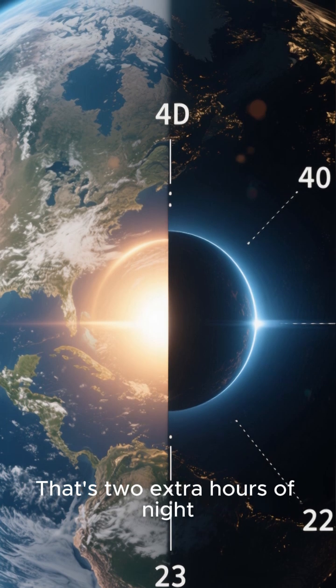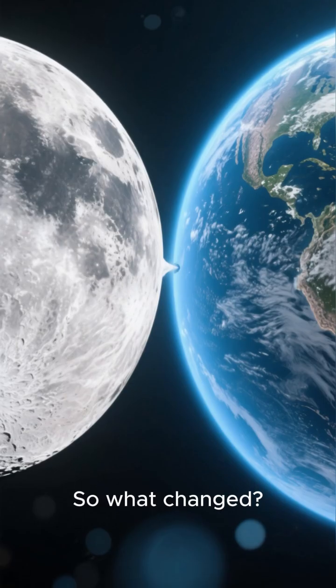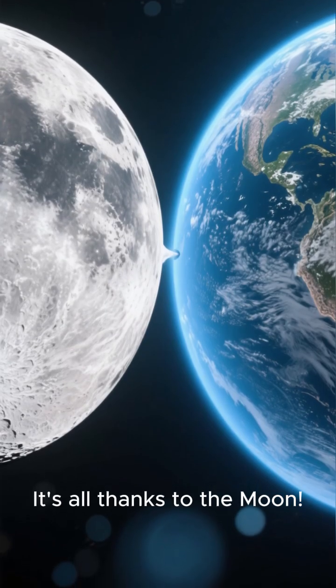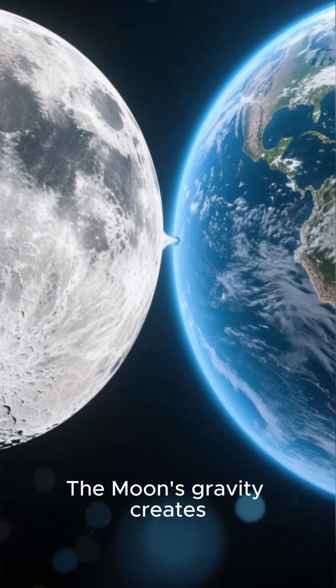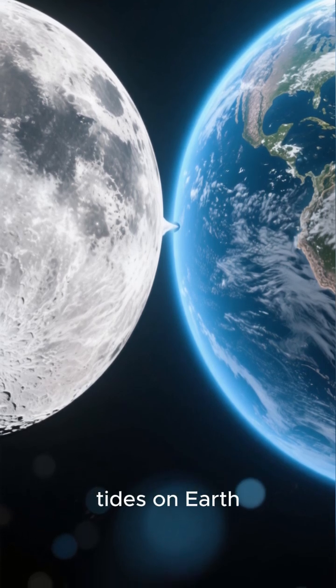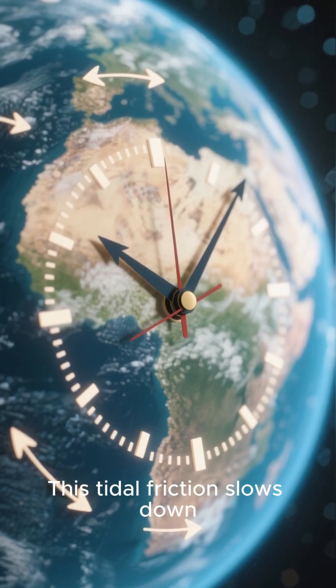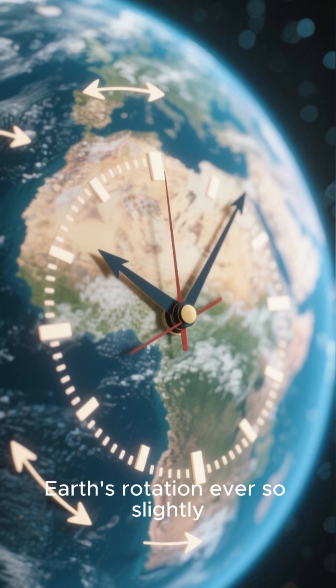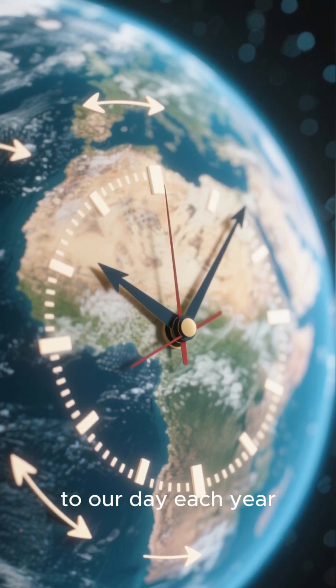That's two extra hours of night or day. So what changed? It's all thanks to the moon. The moon's gravity creates tides on Earth. This tidal friction slows down Earth's rotation ever so slightly, adding milliseconds to our day each year.